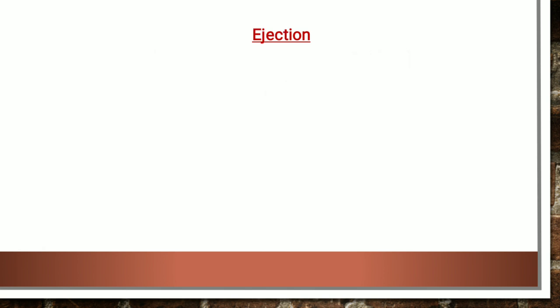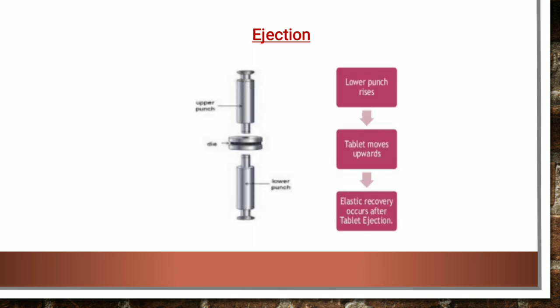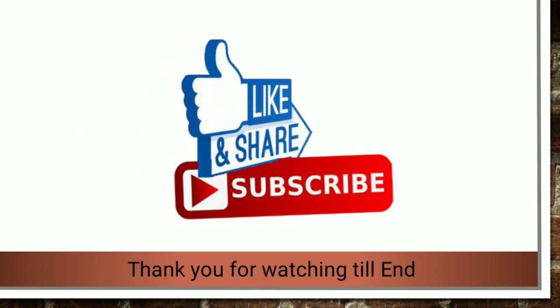The next one is ejection. As the lower punch rises and pushes the tablet upward, there is continuous residual die wall friction. As the tablet is removed from the die, the lateral pressure is relieved and the tablet undergoes elastic recovery with an increase of 2-10% in the volume of the portion of the tablet removed from the die. This is all in this video. Thank you.